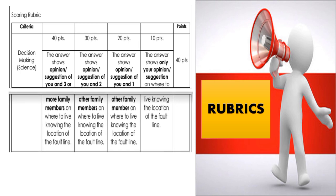Rubrics: 40 points if the answer shows opinion or suggestion of you and three or more family members on where to live, knowing the location of the fault line. 30 points if the answer shows opinion or suggestion of you and two other family members. 20 points if the answer shows opinion or suggestion of you and one other family member. 10 points if the answer shows only your own opinion or suggestion on where to live knowing the location of the fault line.